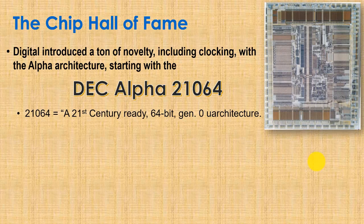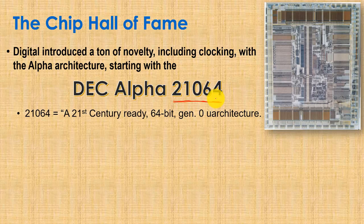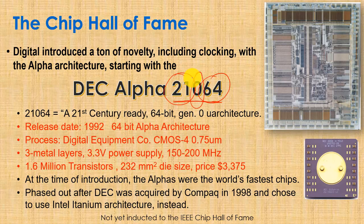That leads us to the Chip Hall of Fame chapter of this lecture. The DEC Alpha introduced a ton of novelty in digital computing. The first Alpha chip, the 21064, got its name because it was a '21st century ready, 64-bit, zero-generation architecture.' It was released in 1992 as a 64-bit architecture, fabricated in DEC's own CMOS-4 process.